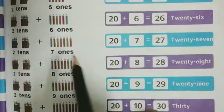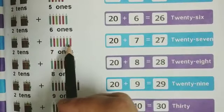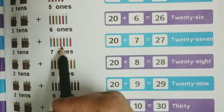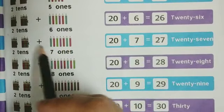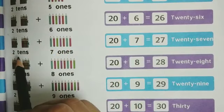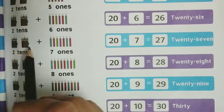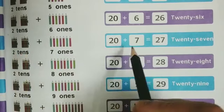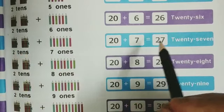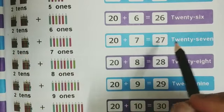Now you can see: one, two, three, four, five, six, seven — 7 ones — plus 2 tens. Two tens means 20 objects or 20 pencils. 20 plus 7 equals to 27.